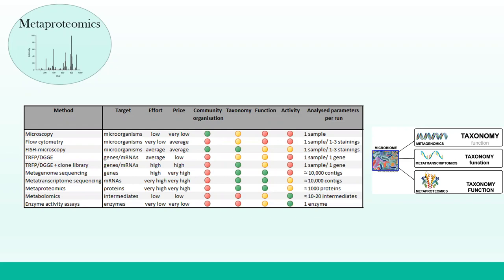Regarding whether metagenomics and metaproteomics offer equivalent resolution on taxonomy: metagenomics is better for taxonomic resolution, for a couple of reasons — it's more well-established, it's a more direct method, and amplicon sequencing is the most direct way to find what's in a sample. There are also better-established bioinformatics workflows for metagenomics. Metaproteomics really only began in 2004, so it's about 15 years old, and only in the past five years has it been taking off more — and currently it's mostly directed at human microbiome models. Environmental soil is gaining traction but is still in its infancy.